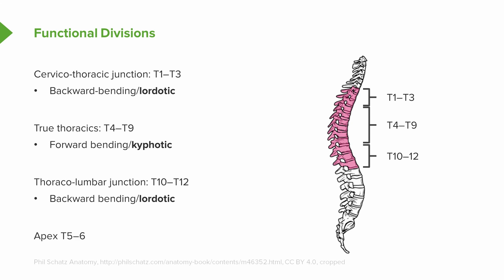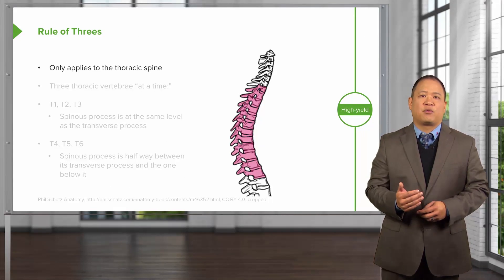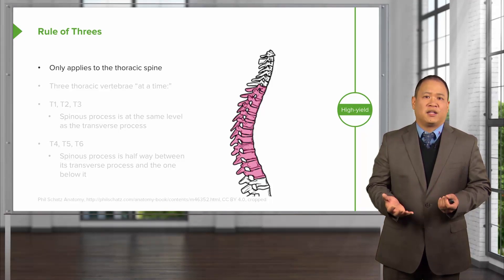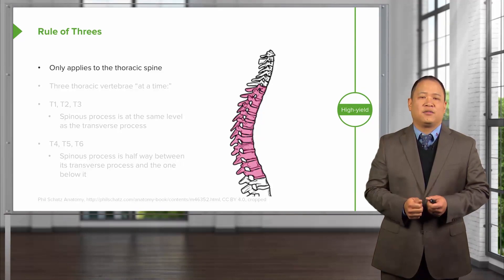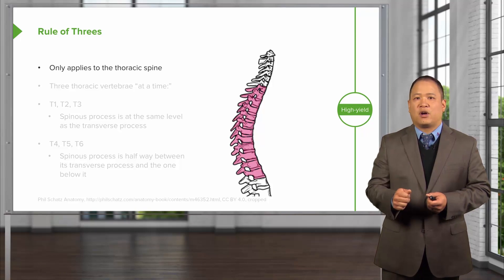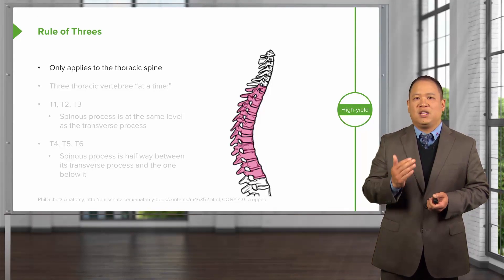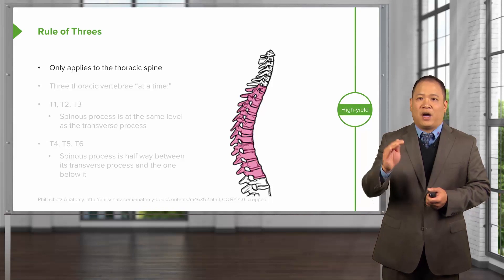You can usually find an apex around T5 to T6. The rule of threes helps us better understand the relationship between the spinous process and the transverse processes. This is important because in osteopathic diagnosis, we utilize the transverse processes to identify somatic dysfunction. For somatic dysfunction, we look for TART changes — tissue texture changes, asymmetry, restriction of motion, and tenderness — along the transverse process. Once we find somatic dysfunction along the transverse process, it's important to understand the relationship between the transverse process and the spinous process so we know anatomically which level we're at.